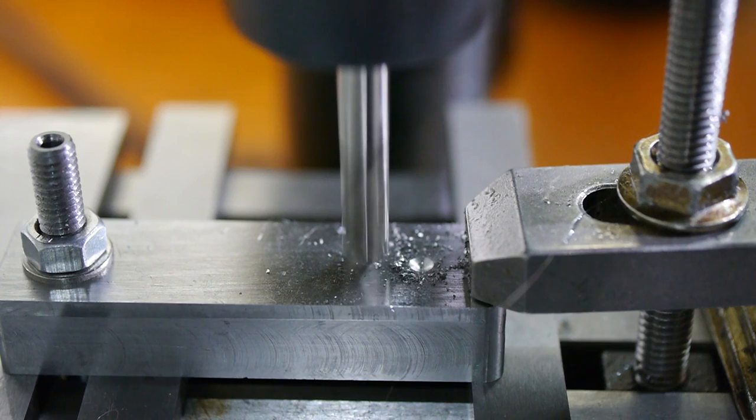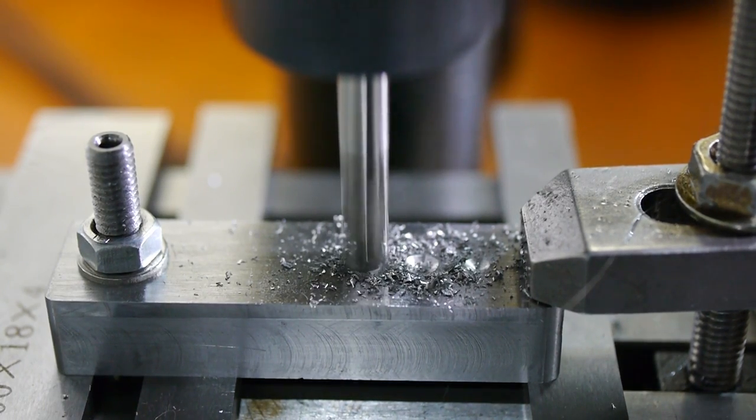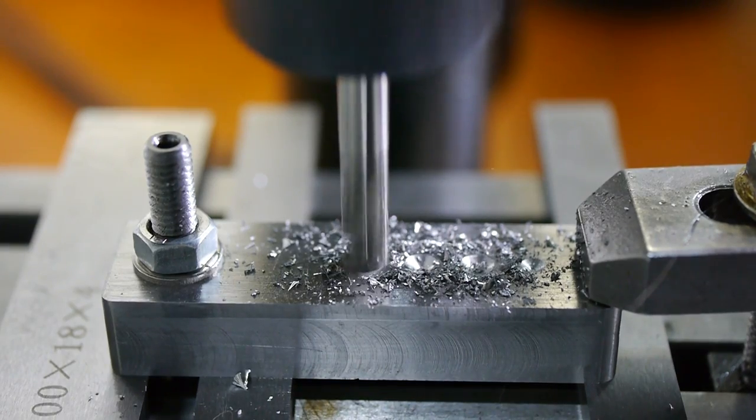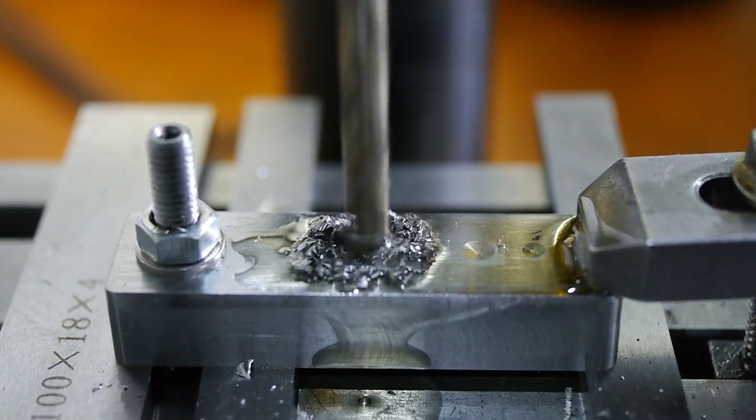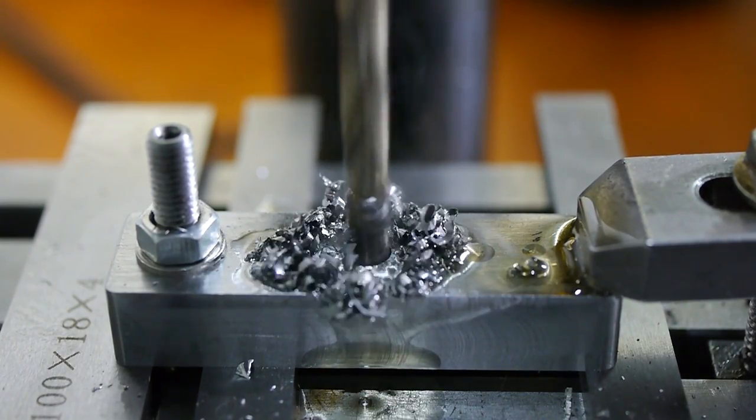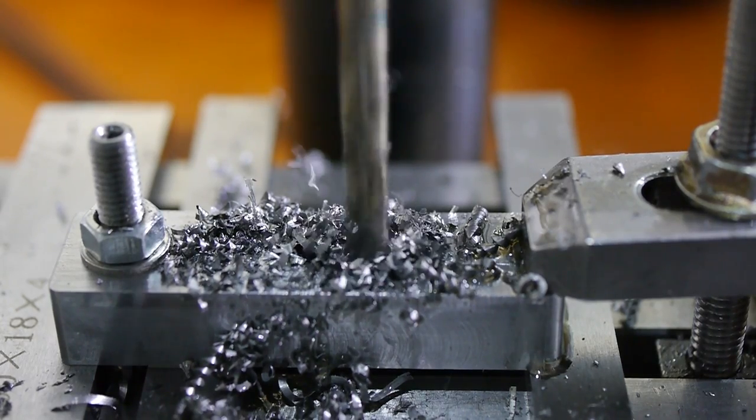I drilled a chain of holes along the path of the slot, half a millimeter smaller than the target width of the slot. Twist drills can remove most of the material more easily than milling, but the most important benefit of doing this only becomes obvious once we are milling.